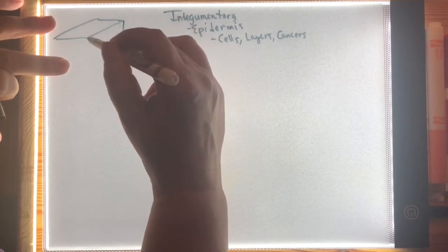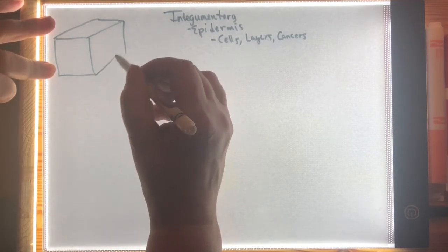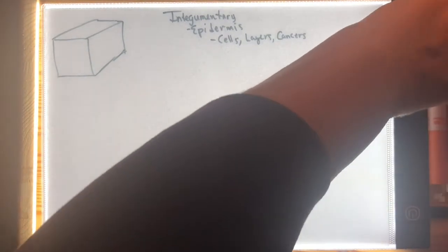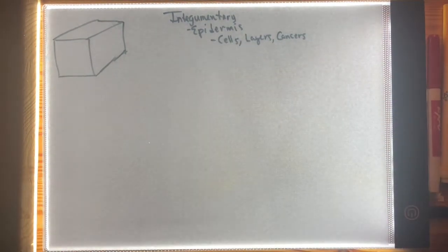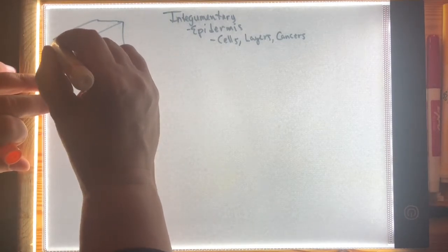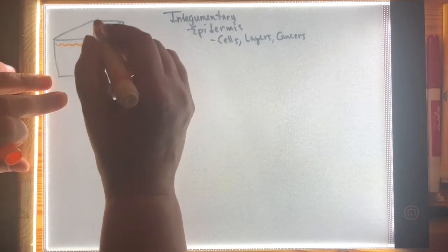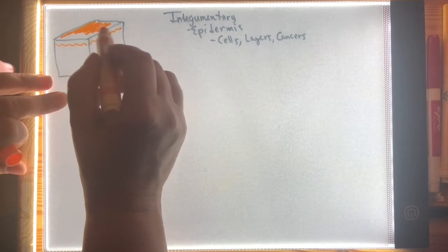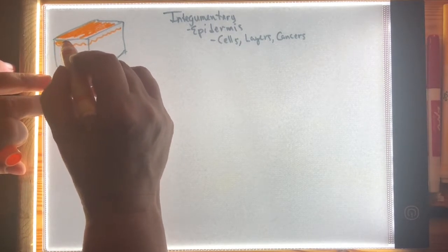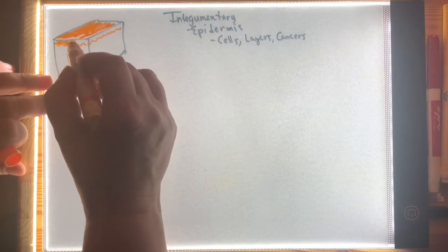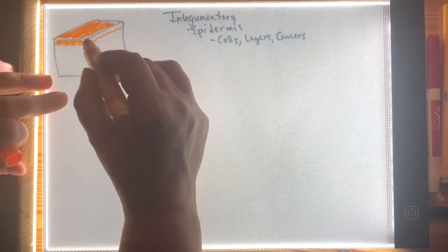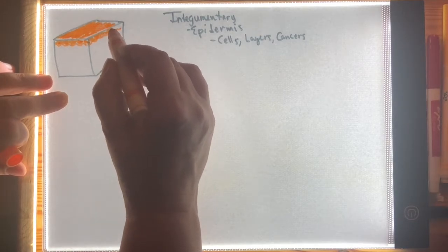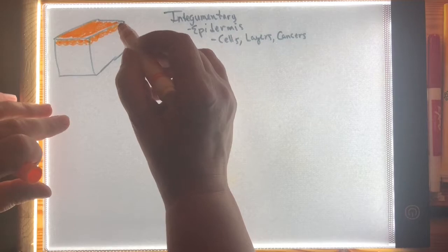The epidermis is the outermost portion of skin. It can be as shallow as 0.05 millimeters — for example, on the eyelids, which is quite thin skin. But it can be as thick as 1.5 millimeters in areas subject to more abrasion, such as the palms of the hand or the soles of the feet. The dermis is deep to the epidermis, and then the hypodermis, or subcutaneous layer — often just called the subcute — is deep to that.